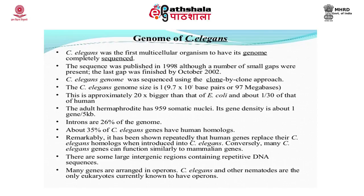The genome size is 9.7 × 10^7 base pairs or 97 megabases. There are some large intergenic regions containing repetitive DNA sequences. Introns comprise 26% of the genome. Around 35% of C. elegans genes have human orthologues showing a lot of promise for development studies. It has been shown repeatedly that human genes can replace their C. elegans homologues when introduced into C. elegans. Similarly, many C. elegans genes can function similarly to mammalian genes. Many genes are arranged in operons. C. elegans and some other nematodes are the only eukaryotes currently known to have operons.